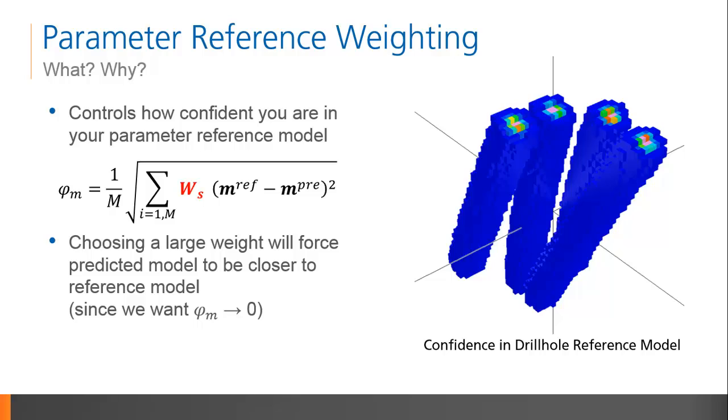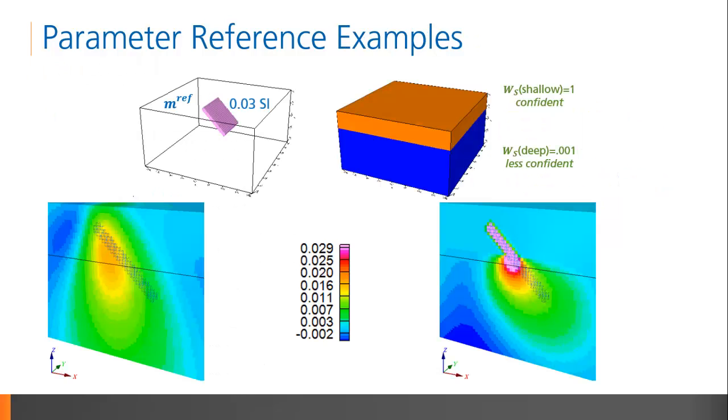The parameter reference model is used by the inversion in conjunction with the parameter weighting model. The weighting model specifies how confident you are in your reference model, and will affect the flexibility of the inversion to converge on a solution that is close to your reference. This equation shows that when the weighting is large, the predicted model must be very similar to the reference model, since we want to minimize the model norm. When the weighting is small, the predicted model has the option to deviate from the reference model. By default, the confidence in the null model is very low.